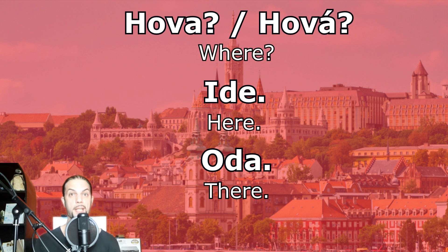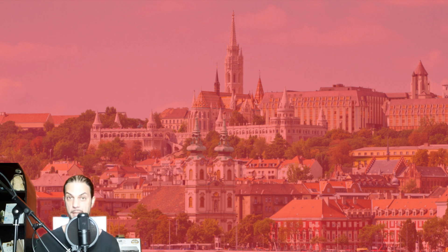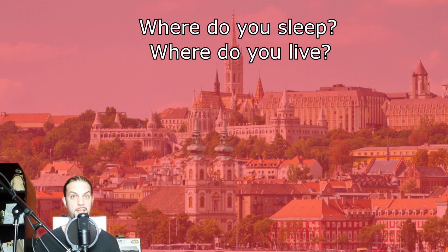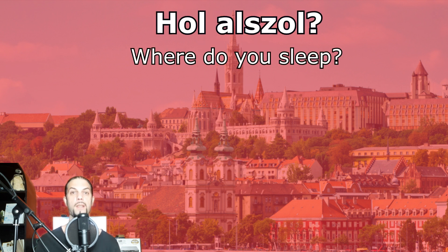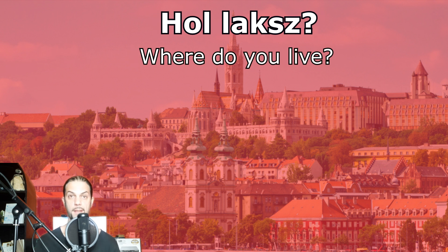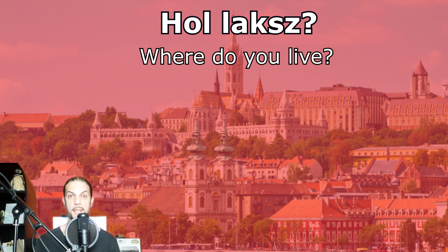Before I say goodbye, let me touch on a little bit of a gray area — when we're talking about where an action is taking place. Questions like where do you sleep or where do you live. In cases like these, we're actually asking about set locations, so the questions are not about the verbs — it's about the locations where the actions are taking place. So you should use hol and itt or ott. For example, hol alszol — where do you sleep? You can just say itt or ott. Or hol laksz — where do you live? You can reply with itt or ott. If we're talking about locations where actions are taking place, the question word is still hol, and here and there are still itt and ott.